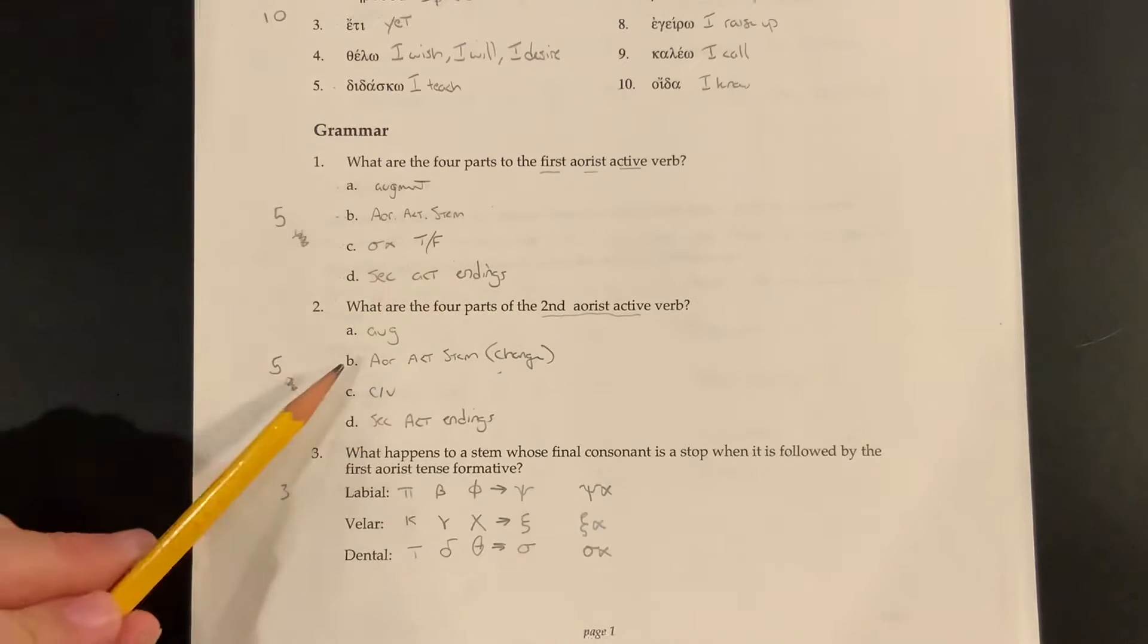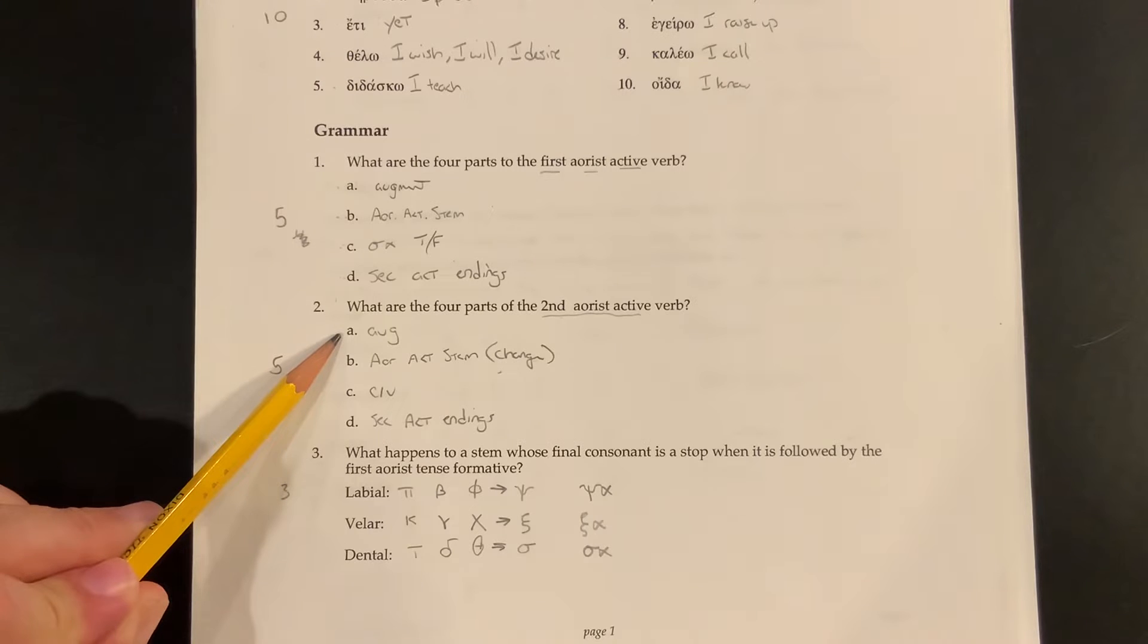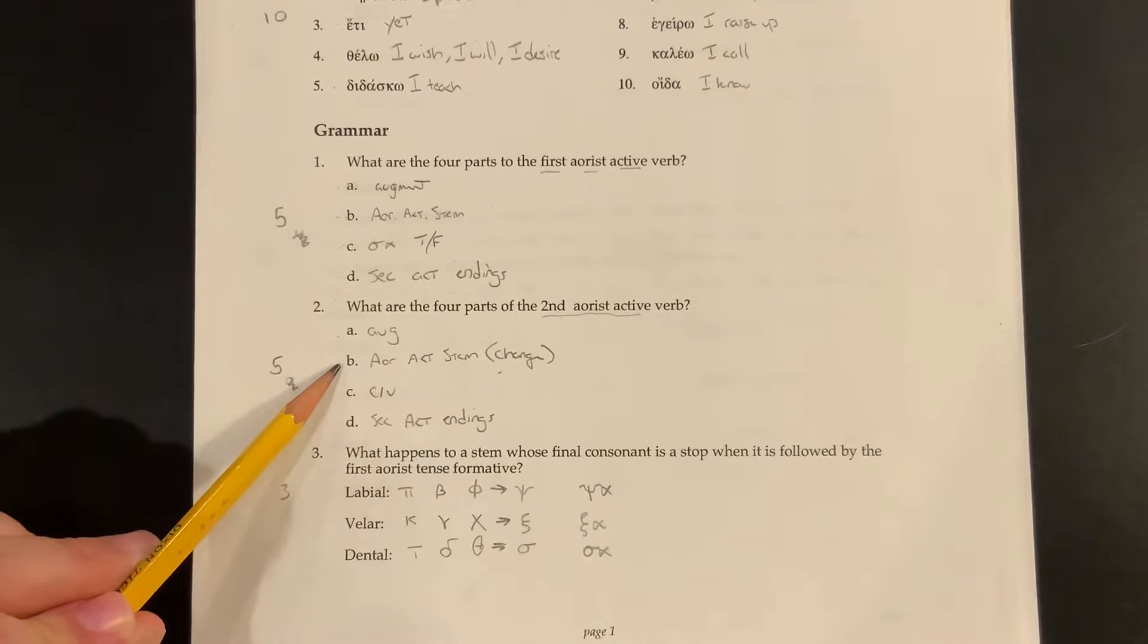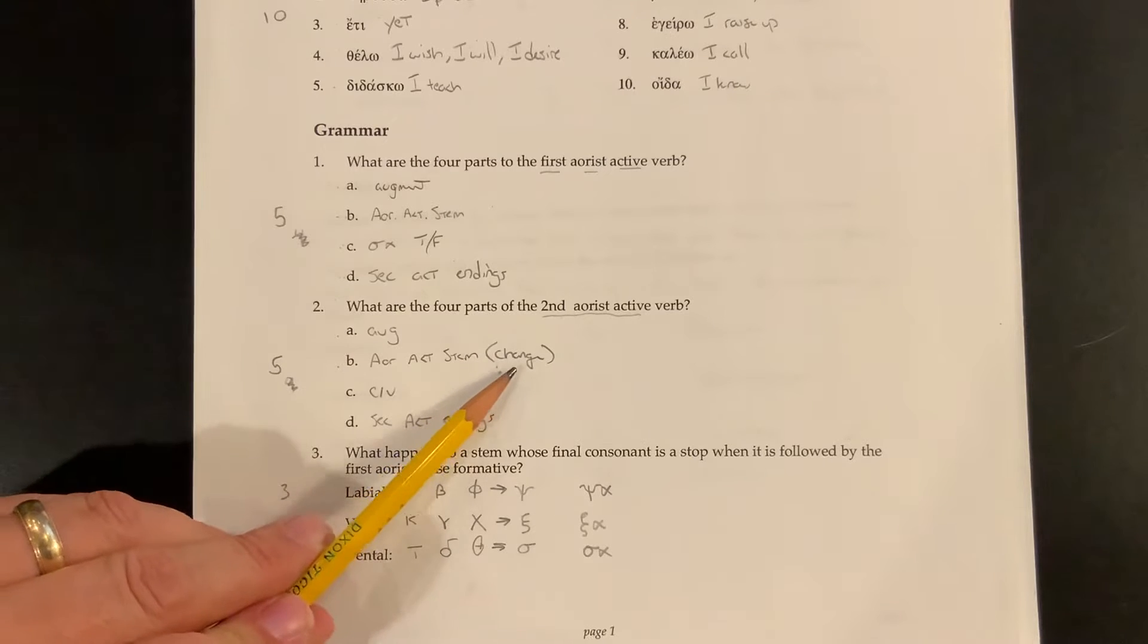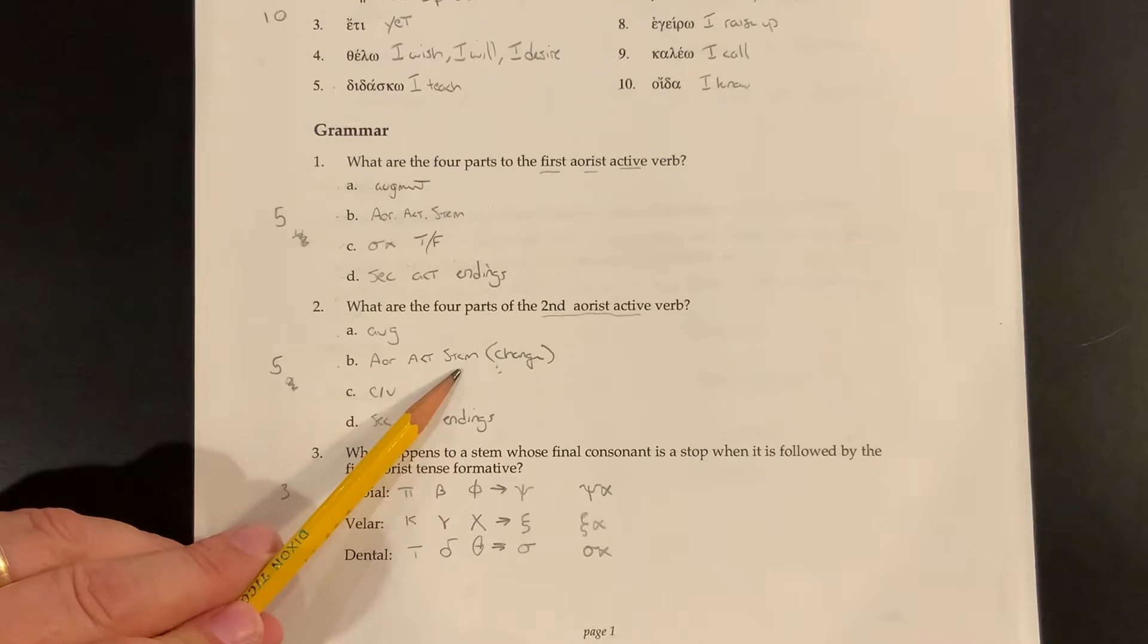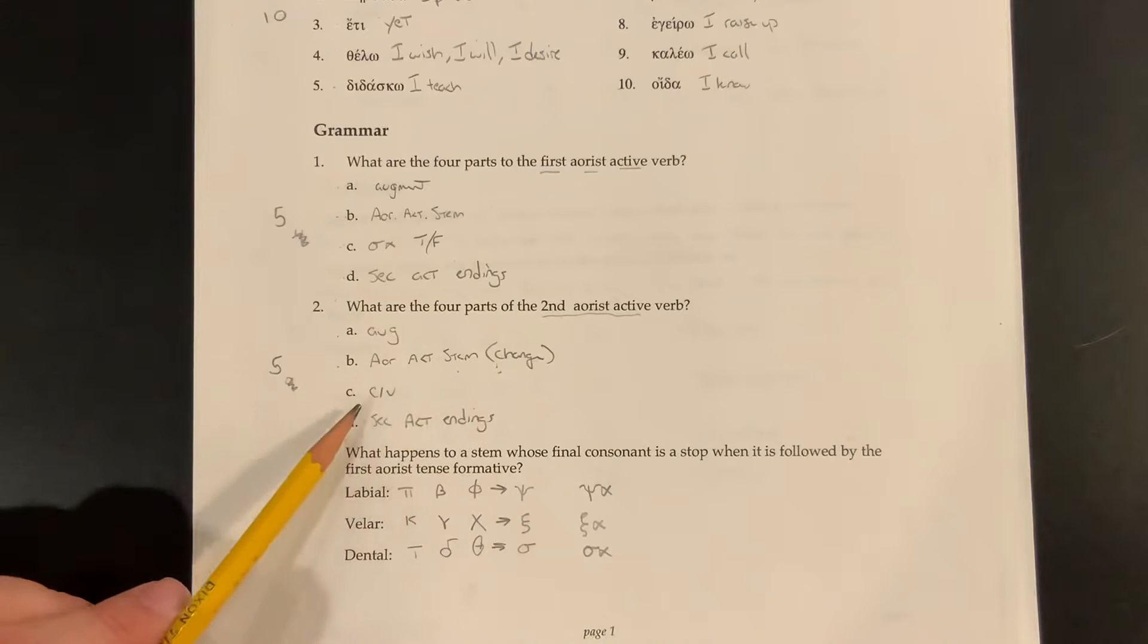Okay, so we have an augment like we do with Aorist verbs. We have an Aorist active stem, which is a change. You don't have to put a change there, but an Aorist active stem is what we have. There is no tense formative. We have a connecting vowel and then we have secondary active endings.